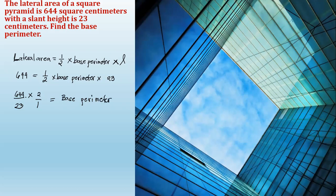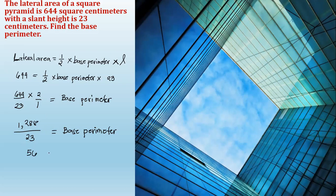So, 644 times two is equal to 1,288. 23 times one is equal to 23. This equals the base perimeter. And then, 1,288 divided by 23 equals 56. So, 56 is the base perimeter.